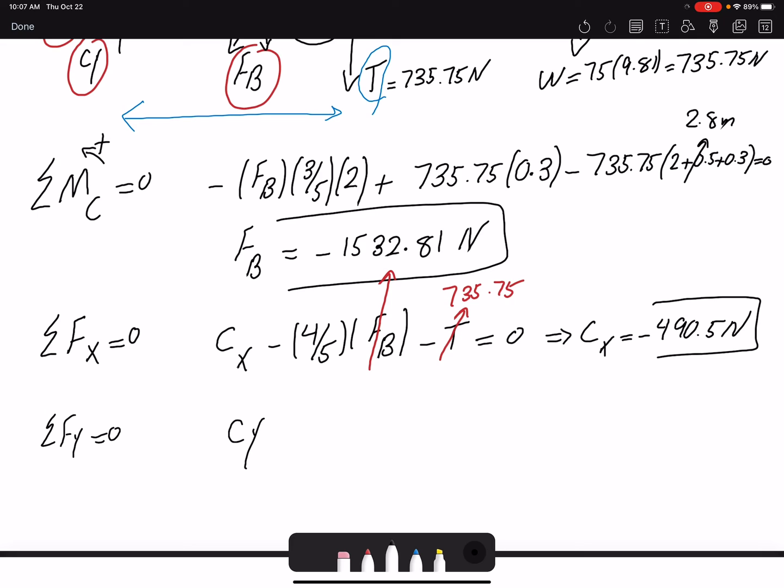Summation of forces in Y, CY minus 3 over 5 FB minus T equals zero. If I replace the value, I get negative 183.9 newtons. So I found CX, CY, and FB.